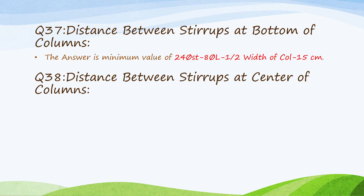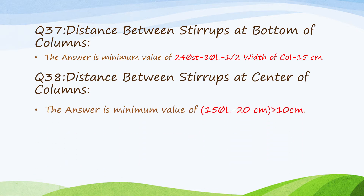Question 38: Distance between stirrups at the center of columns. Minimum value of: 15 times diameter of vertical bars, or 20 cm. The value should be bigger than 10 cm.